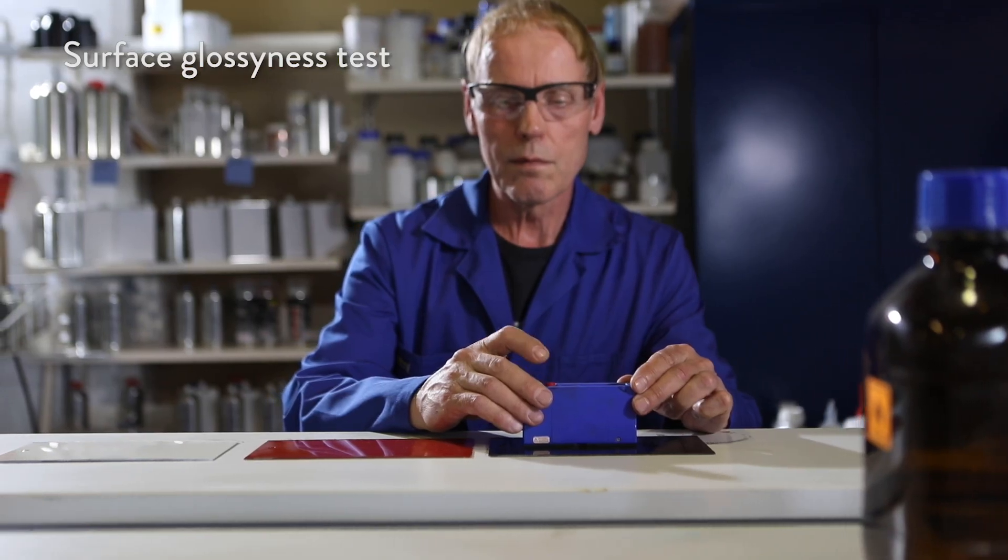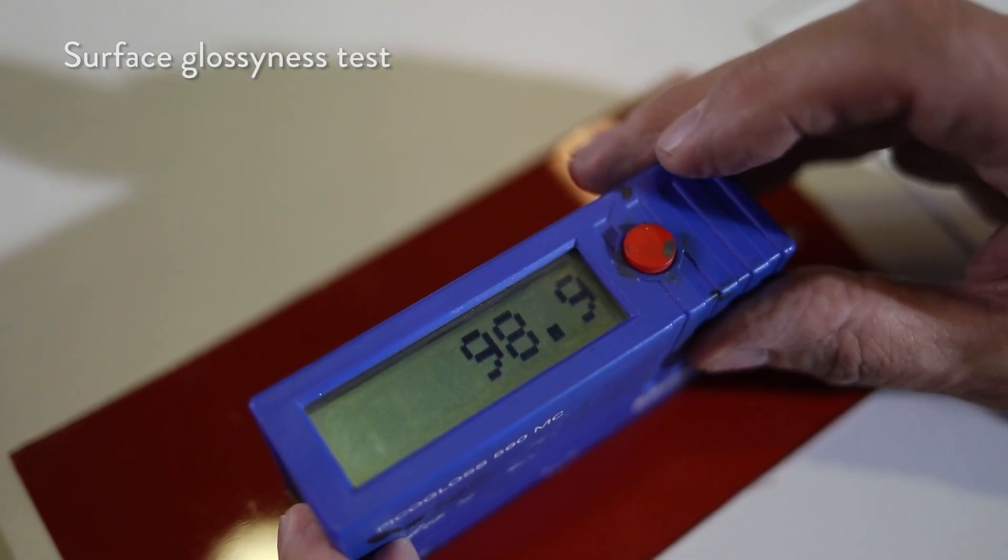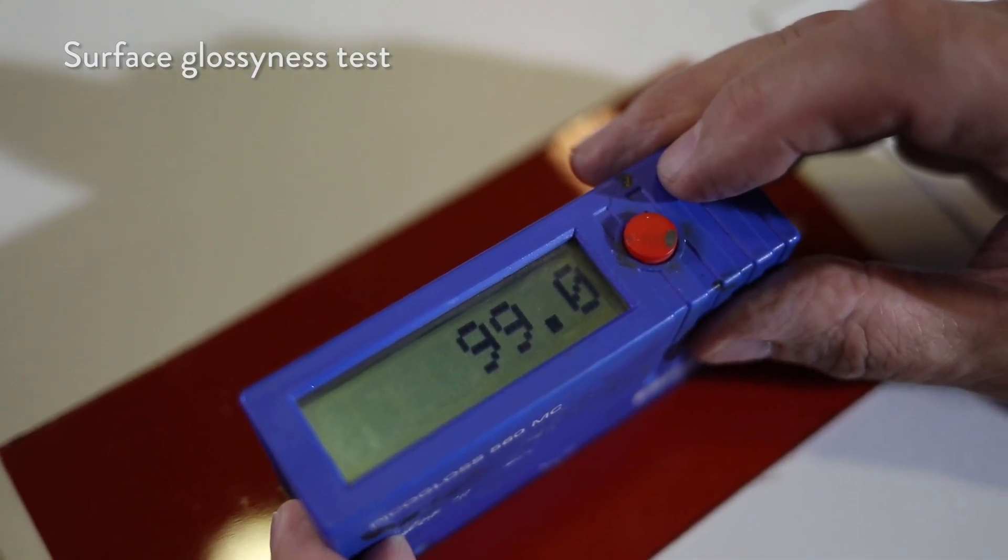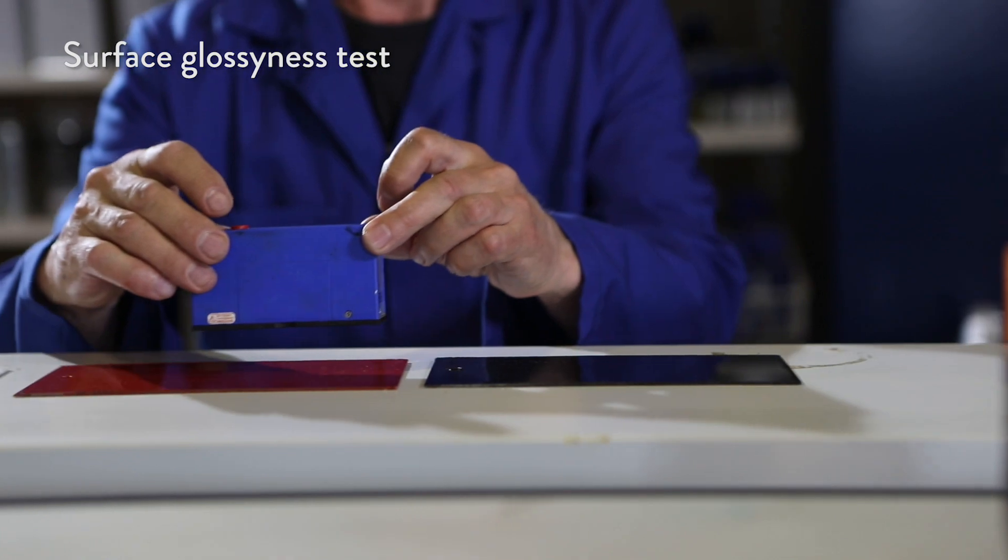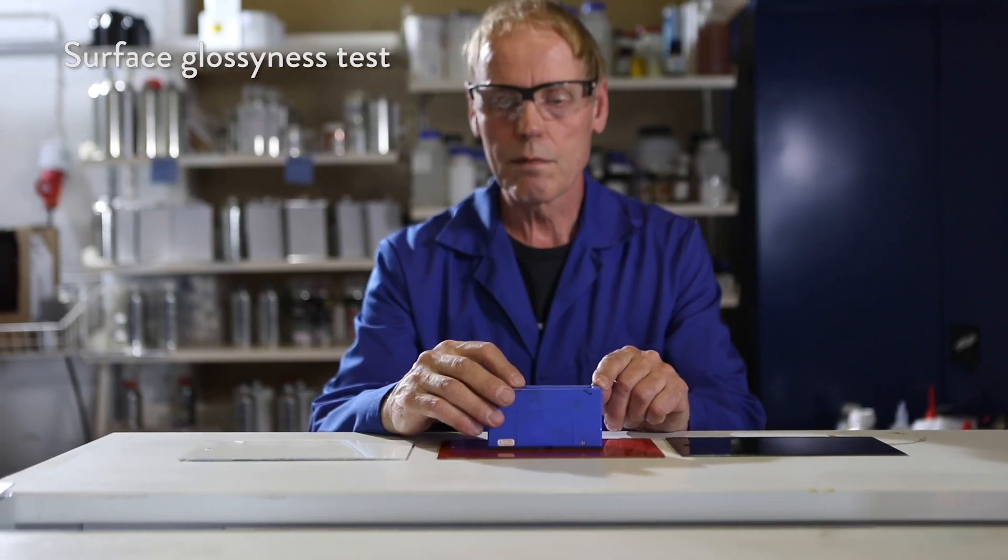2K colors are extremely high gloss. The values are more than 90 gloss units. Clear coats of matte, satin and high gloss are available. The surface can be polished after curing.